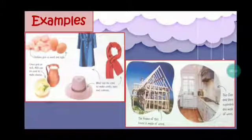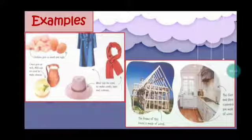The next picture - you can see this is the frame of this house is made up of wood. The frame of this house is made of wood, so this is the example that we can get material from the plant. We can get wood from the plant to make the frame of the house and then the cupboards are made of wood. These are the examples that the plant and animal can give us food and also material.